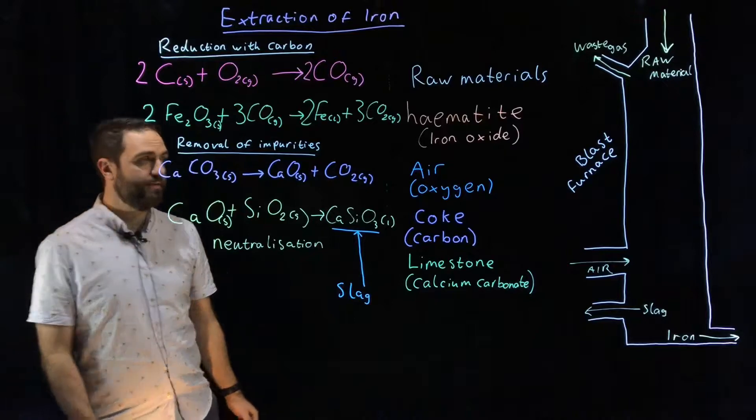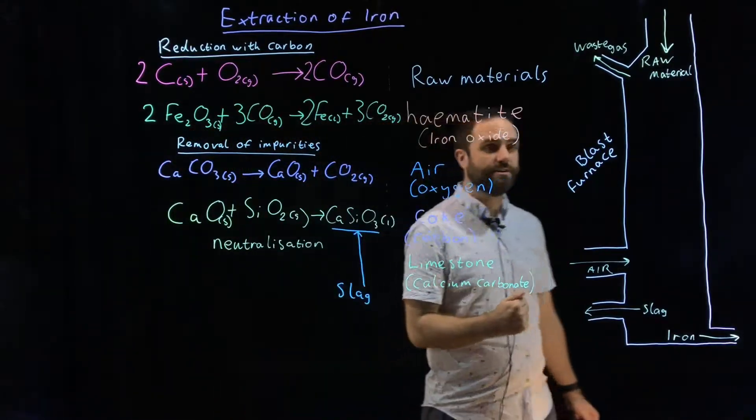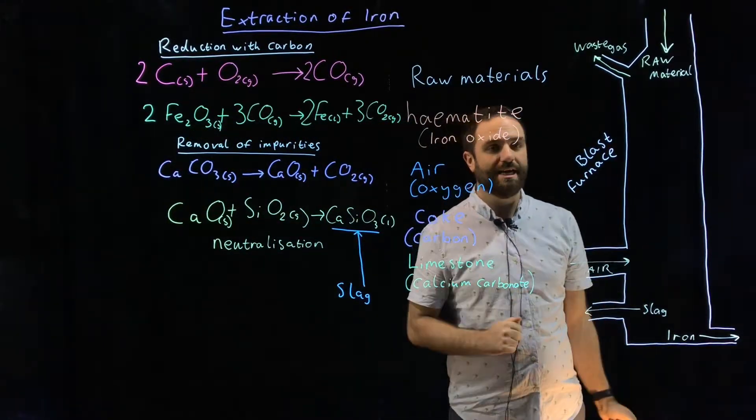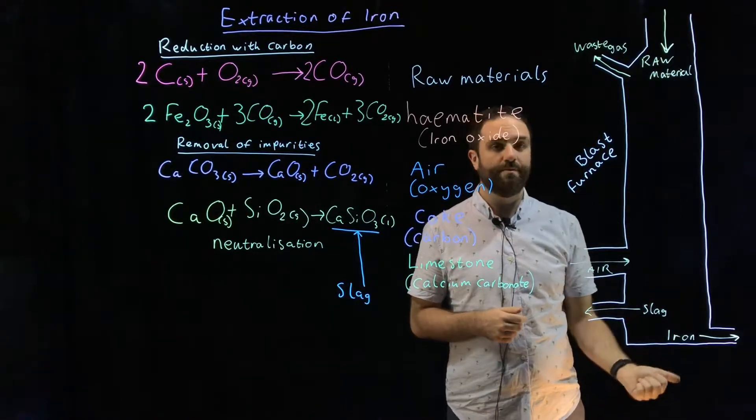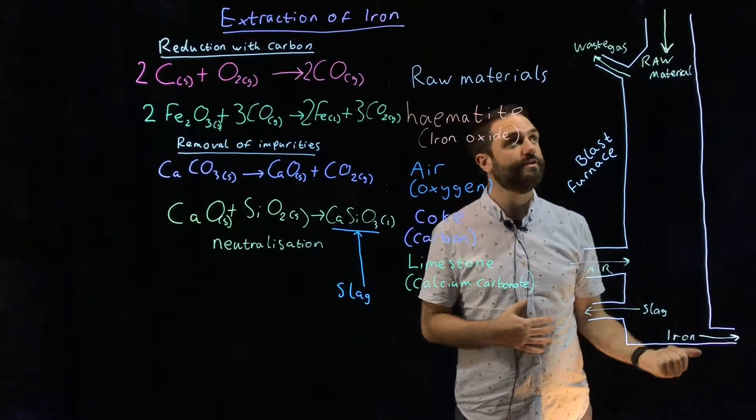Okay so if we have a look at the blast furnace, it is a large tower made of metal and we heat it from the bottom. It's very hot, over 300 degrees Celsius.